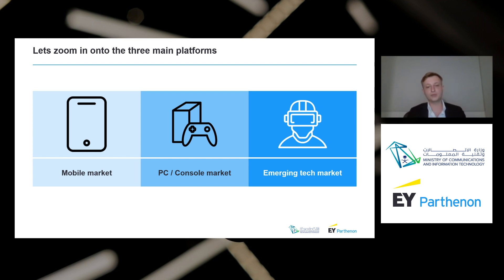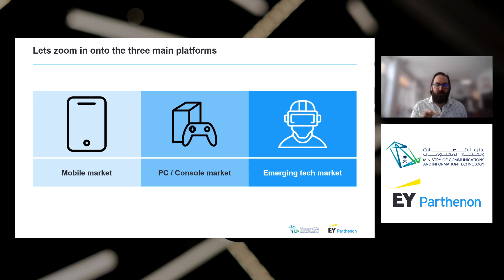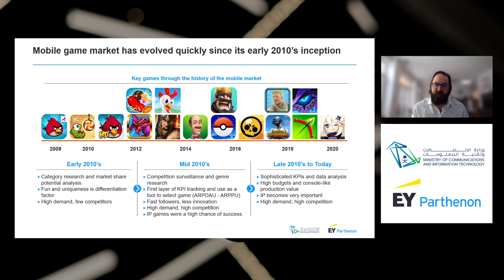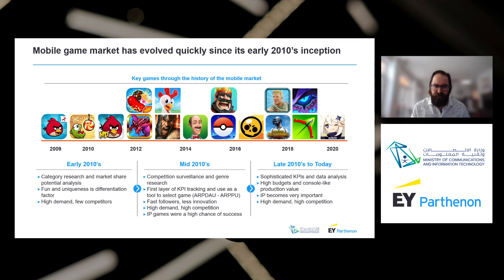Now Louis will take us through the three main platforms: mobile market, PC and console market, and emerging tech market. The mobile market is the youngest of all gaming markets outside of emerging technologies — it started in 2009 with the advent of the iPhone and Android smartphones. Before that, phones had smaller screens and very small memory; you could make games but they were very small, and mobile was not a big player in the overall video games industry.